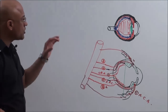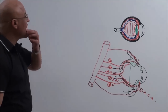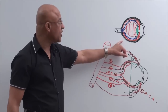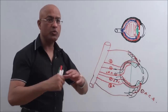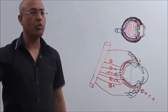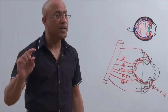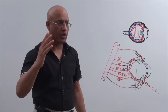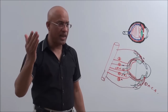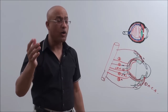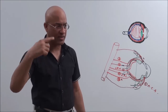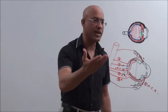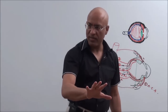Now we will go into detail of the uveal tract. The uveal tract is a vascular and pigmented layer — it is the middle layer of the eyeball. The outer layer is the cornea and sclera, the middle layer is the uveal tract, and the innermost layer is the retina.